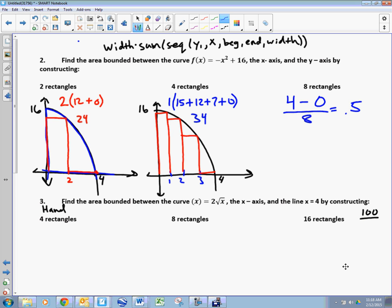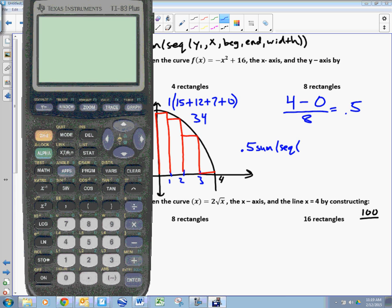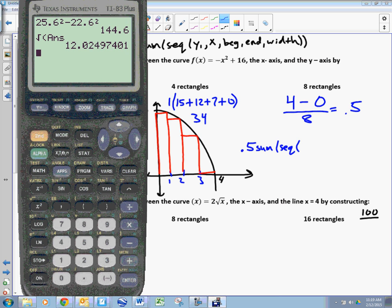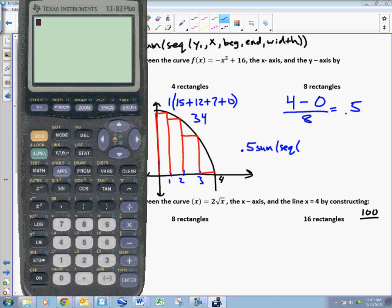Please follow this very closely. You're going to use this formula right here. This is what you'll type in your calculator. We're going to type in the width, which is 0.5, times the sum of the sequence. Let's do it. 0.5.